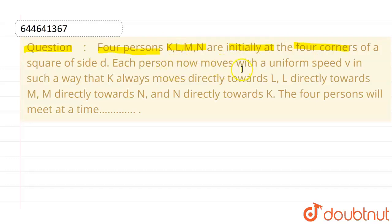Each person now moves with a uniform velocity v in such a way that K always moves directly towards L, L directly towards M, M directly towards N and N directly towards K. The four persons will meet at a time.